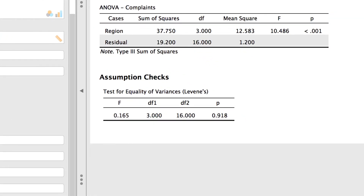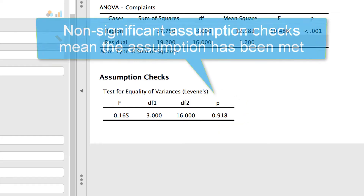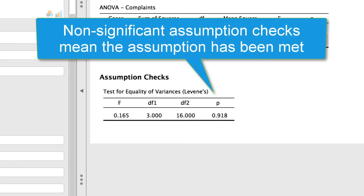We see here that Levene's test is not even close to significance — p equals 0.918 — which is great! Because the Levene statistic is not significant, the variability within the groups is not statistically significantly different. This is what we want. This matches our assumption that the groups have equal, or homogeneous, variance.